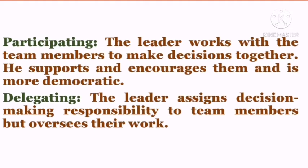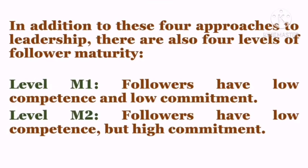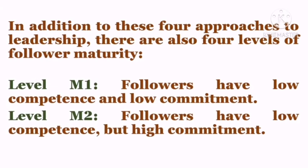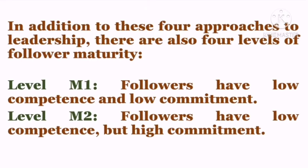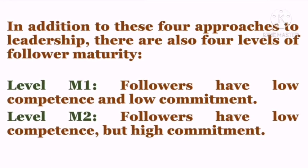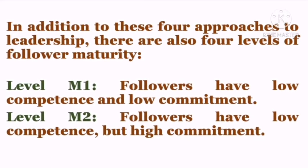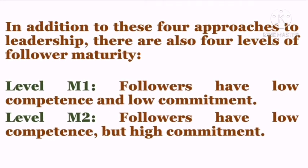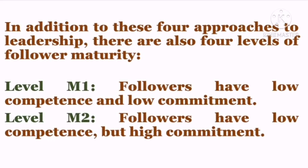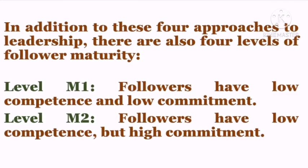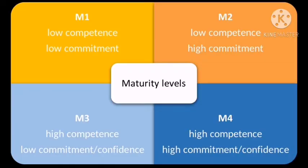In addition to these four approaches to leadership, there are also four levels of follower maturity. Maturity Level 1, M1: followers have low competence and low commitment. Maturity Level 2, M2: followers have low competence and high commitment. Maturity Level 3, M3: followers have high competence but low commitment.